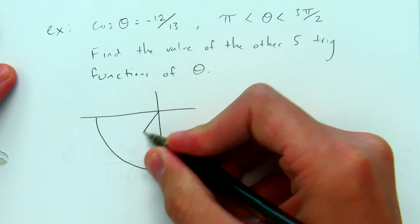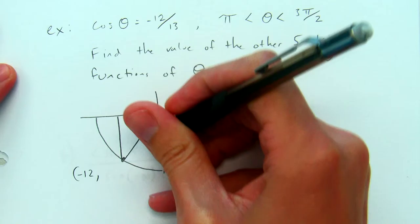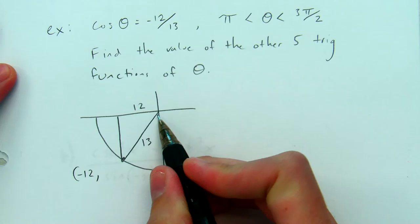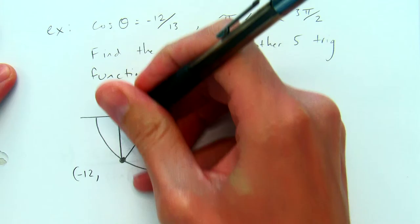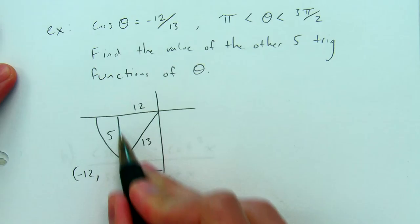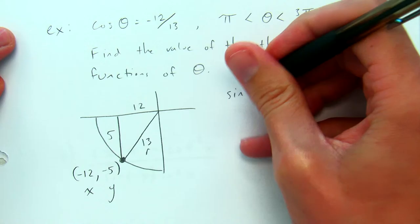Here's π — 180 degrees — and 3π/2 is 270, so it's some angle in the third quadrant. Because cosine is negative 12 thirteenths, I know that's x over r, so x is −12 and r is 13. The length of that side of the triangle is 12, which gives the coordinate an x value of −12. Using the Pythagorean formula, 12 squared plus what squared equals 13 squared, I find the other leg is 5. So the coordinate is (−12, −5), and I have x, y, and r.